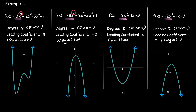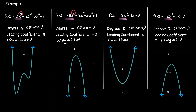Now we can generalize the case. For any polynomial of an even degree, if the leading coefficient is of a positive sign, then both end behaviors will always be facing up. And if it's negative, both end behaviors will be facing down.